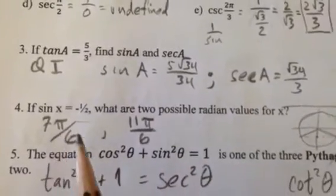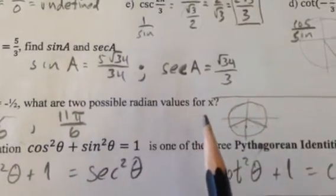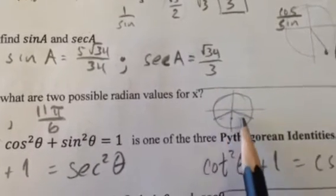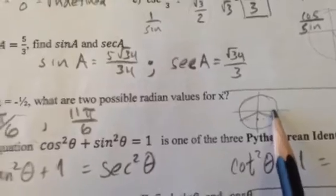Okie doke. If sine of X equals negative 1/2, what are two possible radian values for X? That would be down here where the Y value is negative 1/2. That's 7pi over 6 and 11pi over 6.